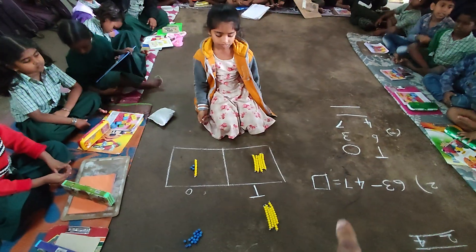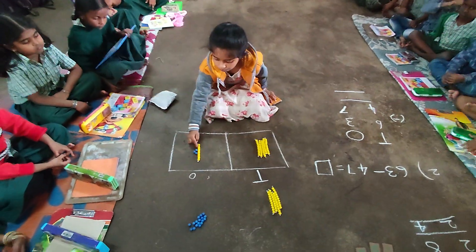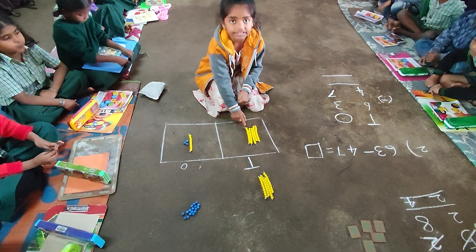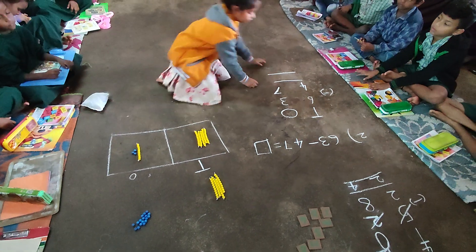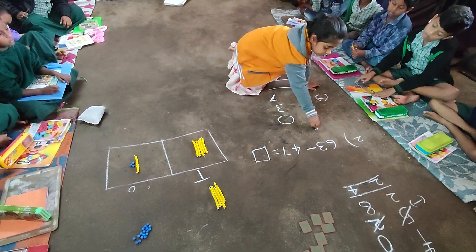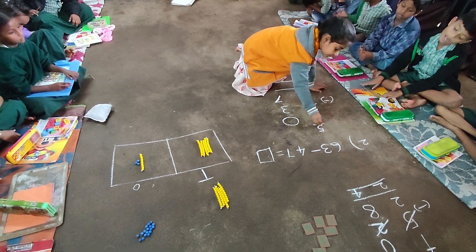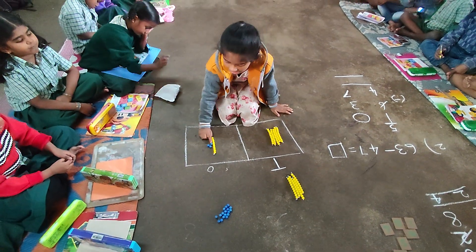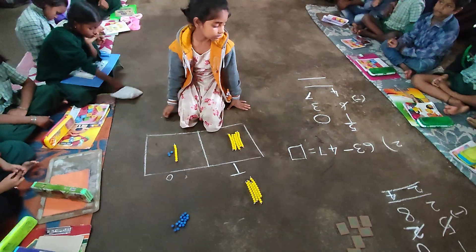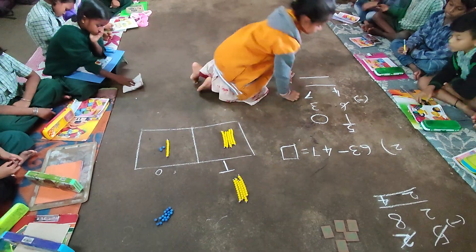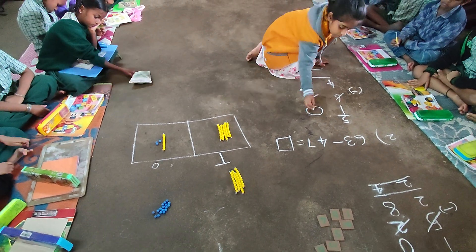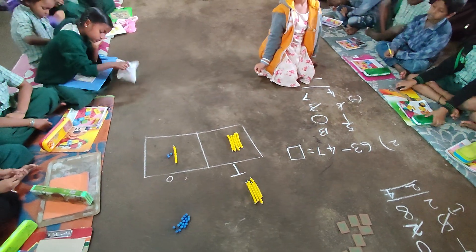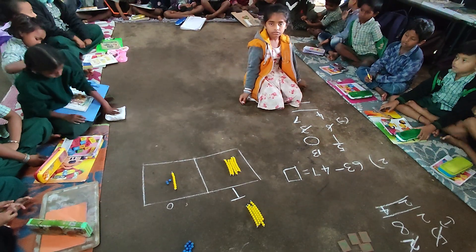Now how many tens are there? Count the tens: 1 ten, 2 tens, 3 tens, 4 tens, 5 tens. How many ones are there? 10, 11, 12, 13. Right there in the ones place.